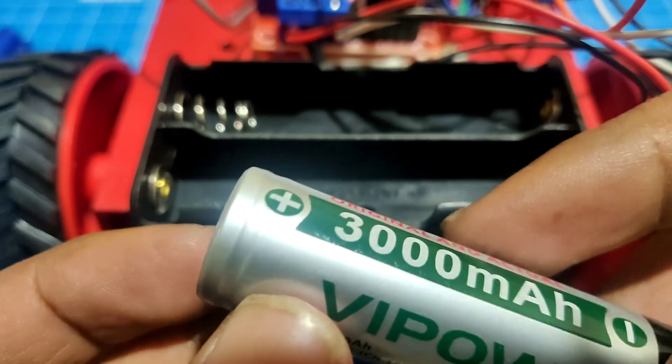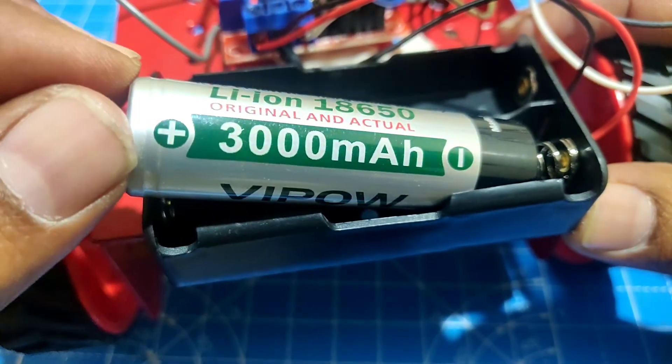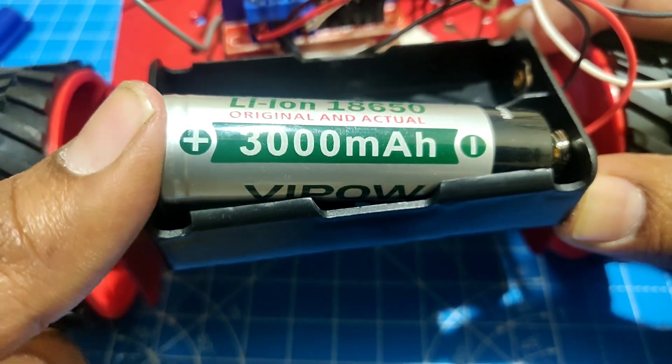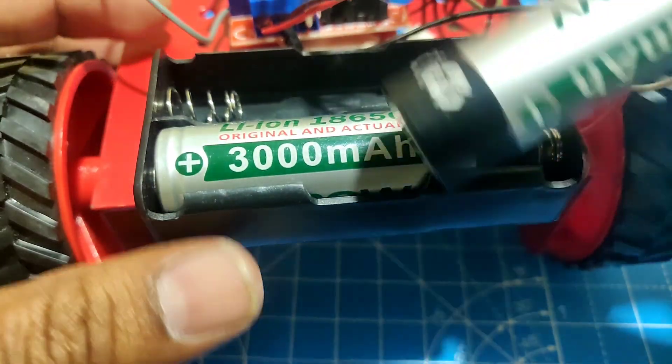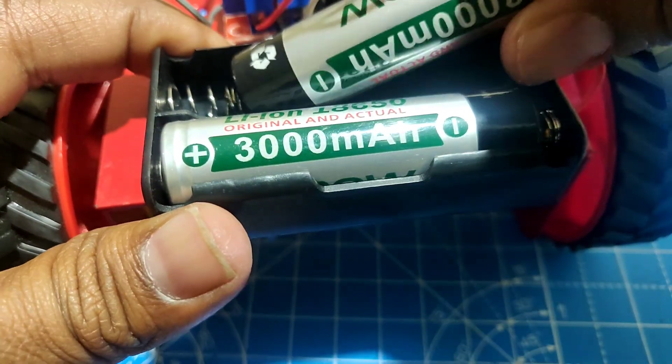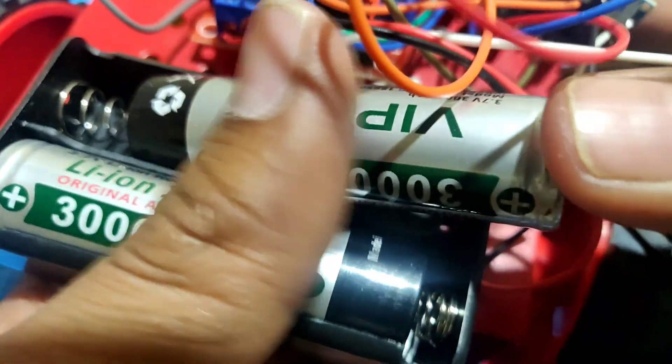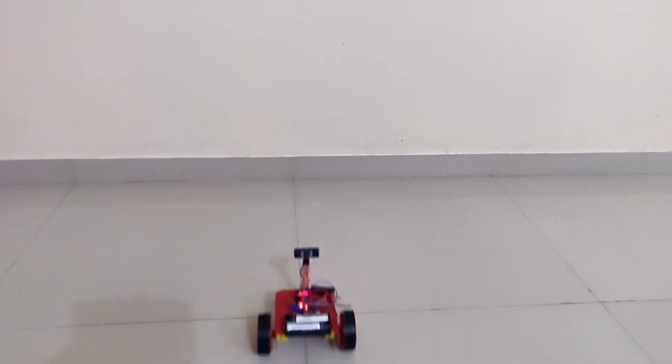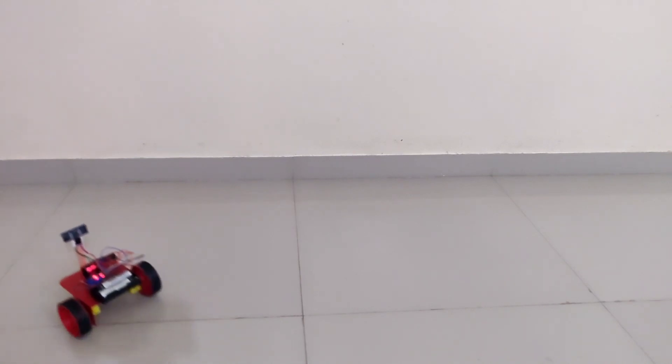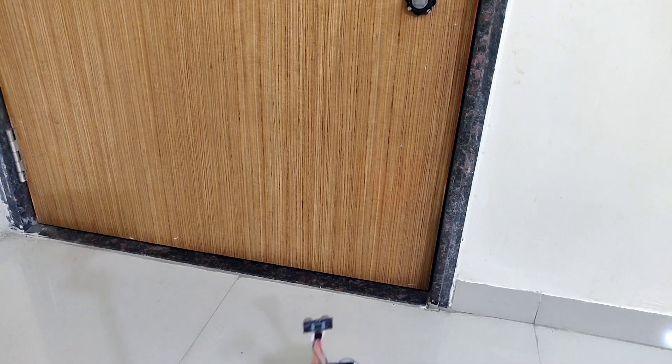Now, place the batteries in the battery holder. Here I have taken 3000mAh 3.7V battery. Keep in mind the polarity while placing the batteries in the battery holder. Now, place the battery holder.